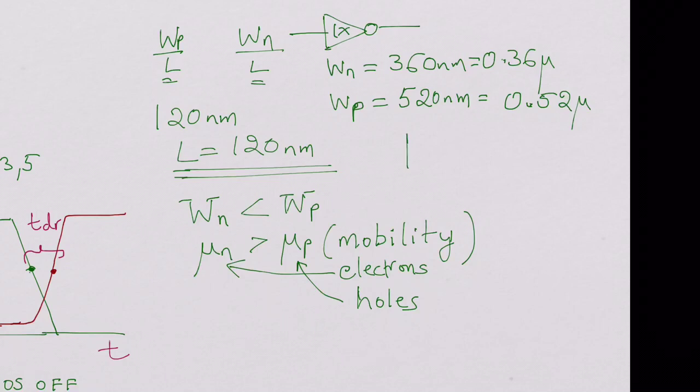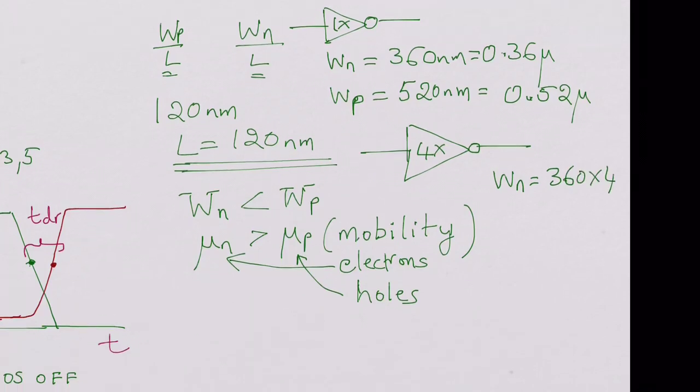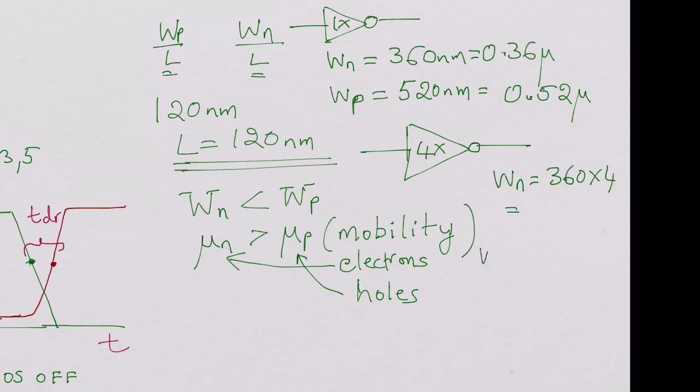And WP would usually be higher, say usually around something like 520 nanometers or 0.52 micron. And now for, say, for a 4X gate, for example, you would have the L would still be 120 nanometers, but the WN would now be 360 multiplied by 4, and WP would be 520 multiplied by 4, say approximately 1.4 microns and say 2 microns. So they scale accordingly.